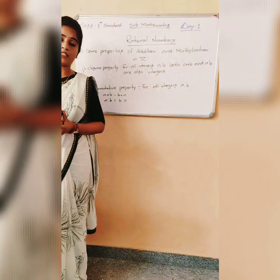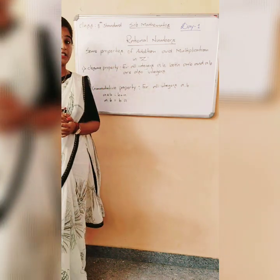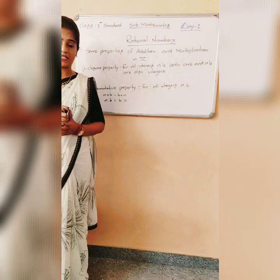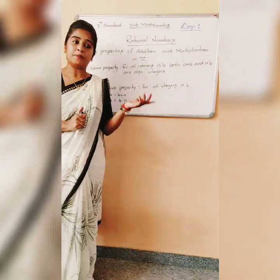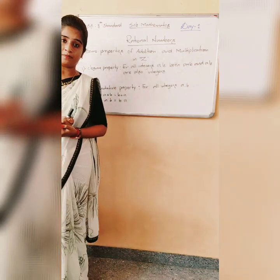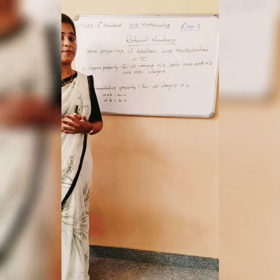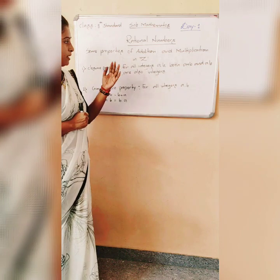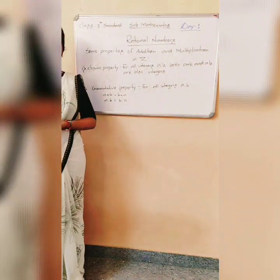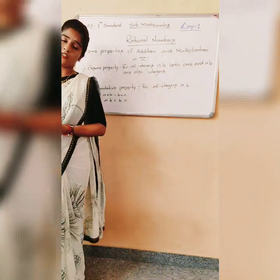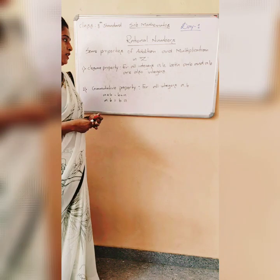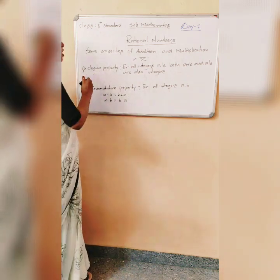So let's look at the properties of addition and multiplication in Z — where Z represents integers. In the previous year we discussed properties based on natural numbers and whole numbers. In this chapter we will discuss the properties in integers as well as rational numbers. We have different types of properties: closure property, commutative property, associative property, and distributive property. Let's take the first property — closure property.